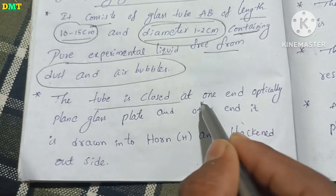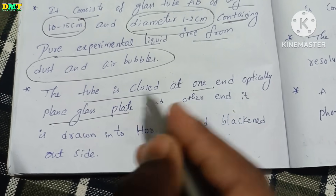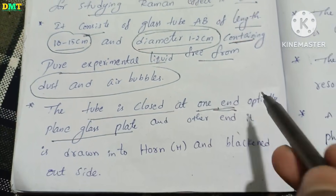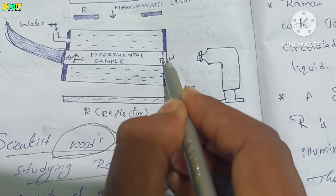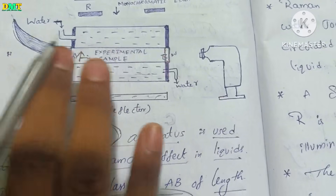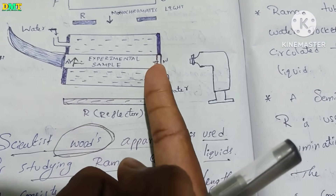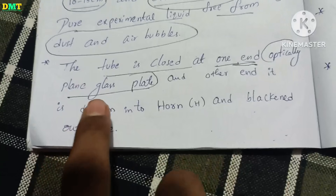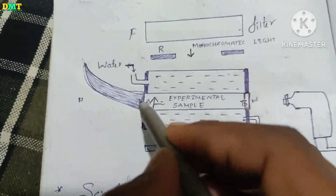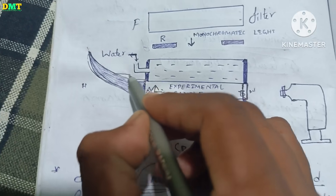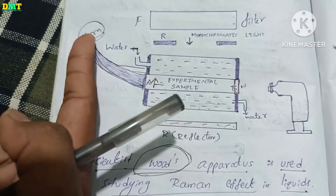The tube is closed at one end with an optically plain glass plate. The other end is drawn into a horn shape. The tube is closed at one end with a glass plate, and the other side is horn-shaped.